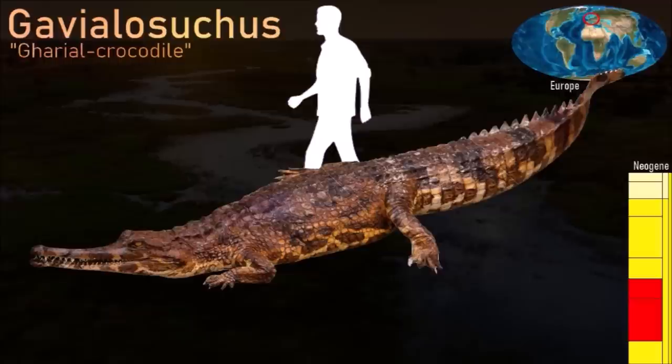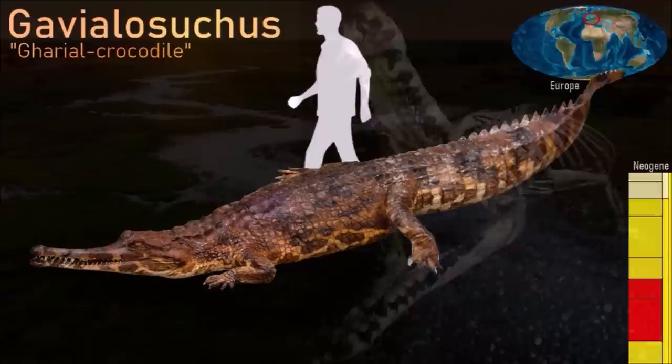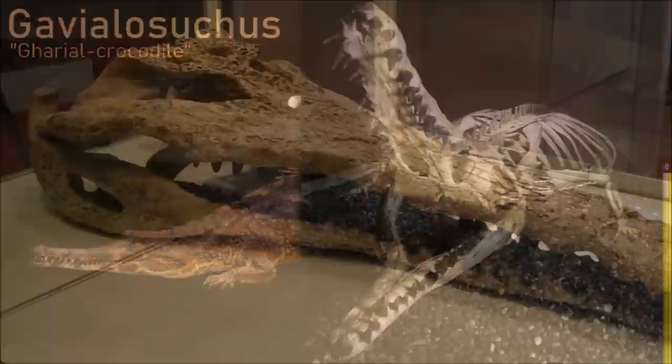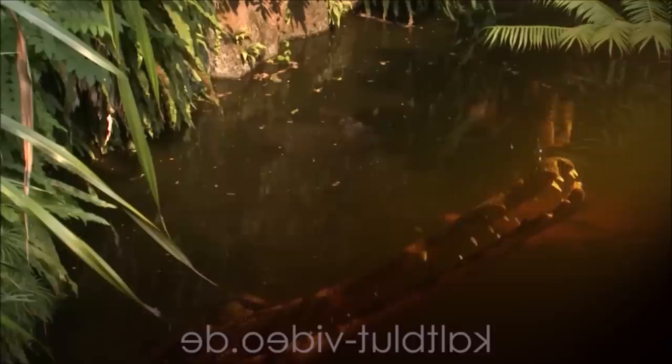Gavialiscus was an extinct gharial from the late Oligocene to early Pliocene of North America and the early Miocene of Europe. Like living gharials, it had a very long skull with a narrow snout that it used to catch fish. Gavialiscus fossils have been found in coastal deposits, which suggests that it lived in estuaries or shallow seas where it could have fed on a variety of fish. Although living gharials are restricted to India and southeastern Asia, fossils of different species found in Florida, Austria, and Georgia suggest that the group was once distributed in swampy and coastal habitats all over the tropical regions of the world.